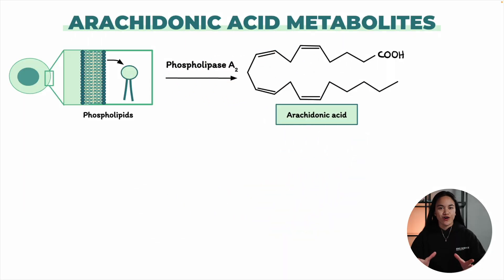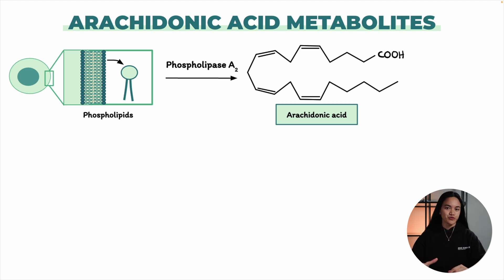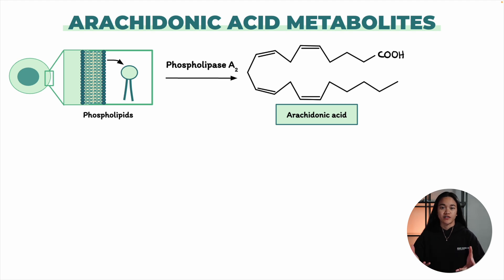In this video we're going to cover arachidonic acid metabolites, which are a class of mediators. We'll explore the major pathways and the key metabolites produced. We'll also look at the role of cyclooxygenase enzymes and the two common variants, COX-1 and COX-2.